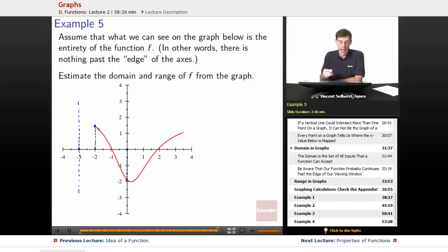And over here, 3 gets put in, 4 doesn't get put in, but it looks probably like 3.5 gets put in. So we'd say that the domain is going to go from negative 2 to 3.5.